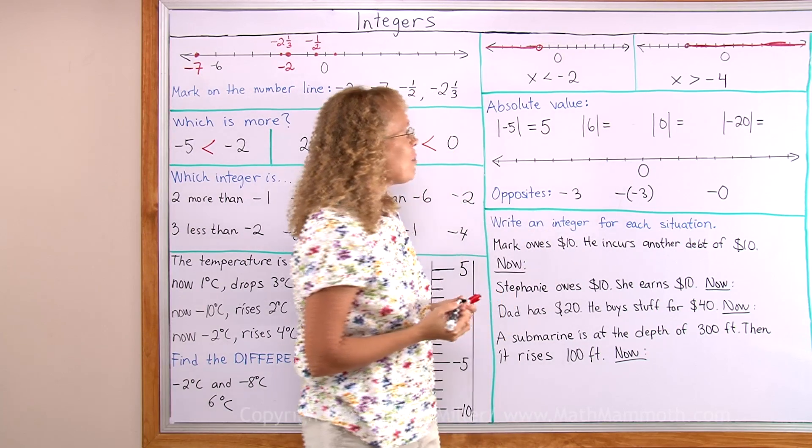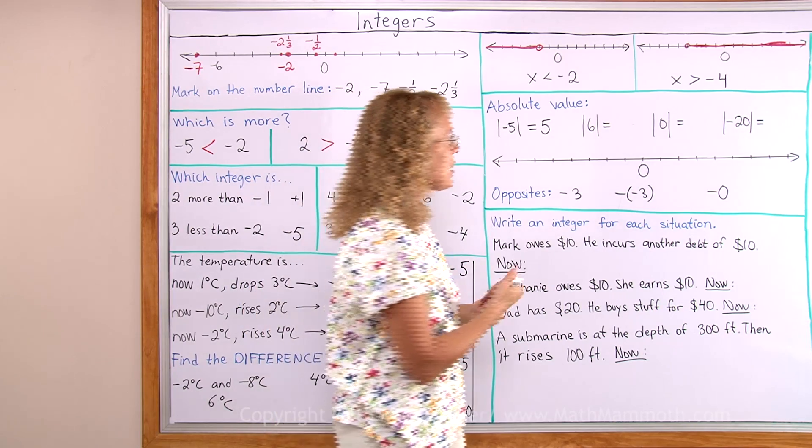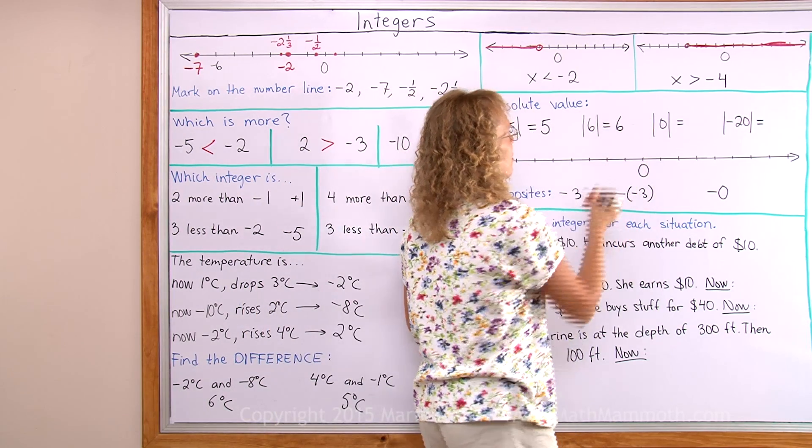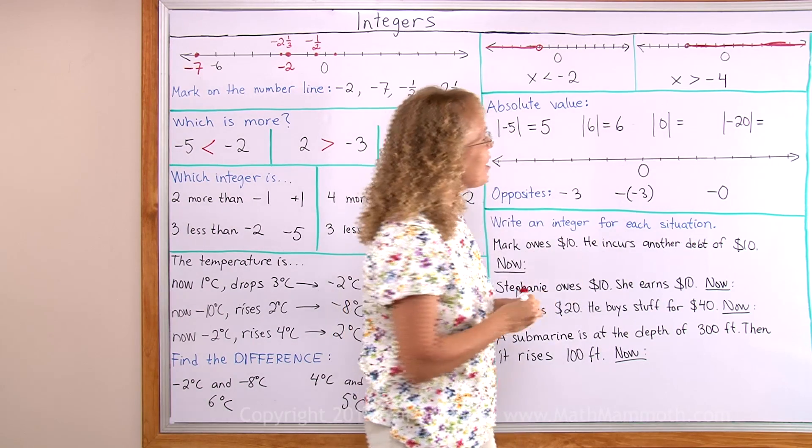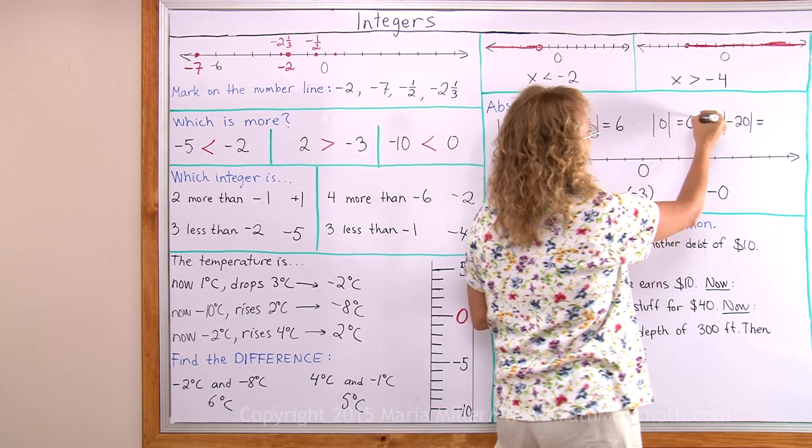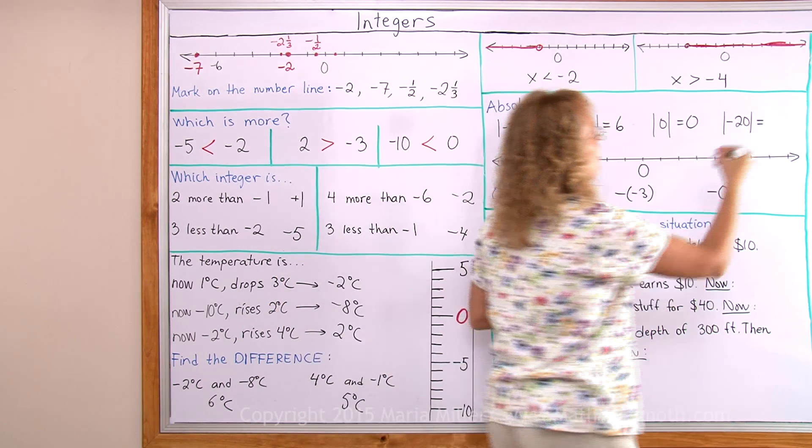Now what would be the absolute value of 6? So how far is 6 from 0? It is 6. 6 steps from 0. How far is 0 from 0? Well it is 0 steps from 0. And how far is negative 20 from 0? 20 steps from 0.